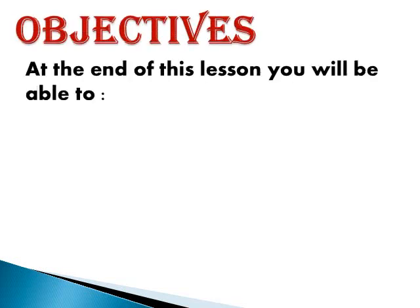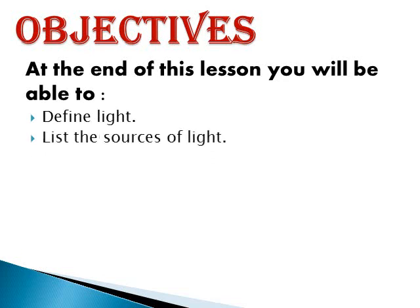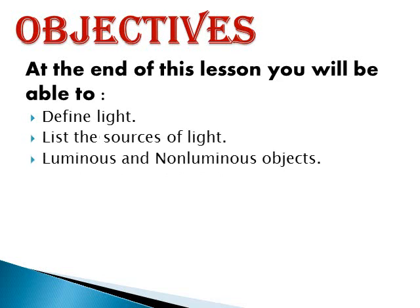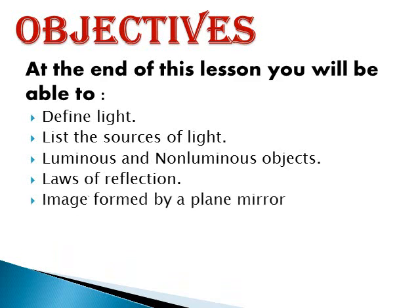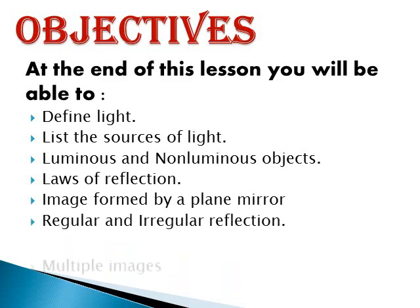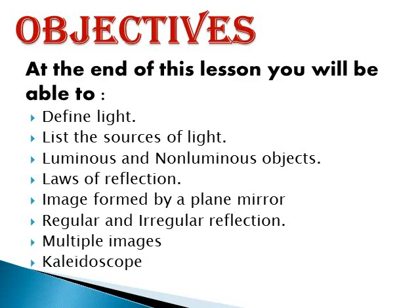At the end of this chapter, you will be able to define light, list the sources of light, luminous and non-luminous objects, laws of reflection, image formed by a plane mirror, regular and irregular reflection, multiple images and kaleidoscopes.